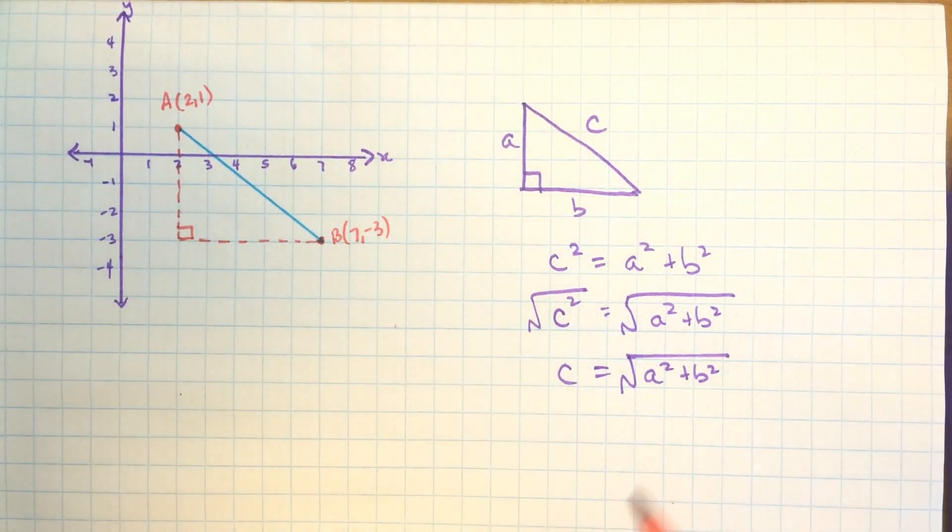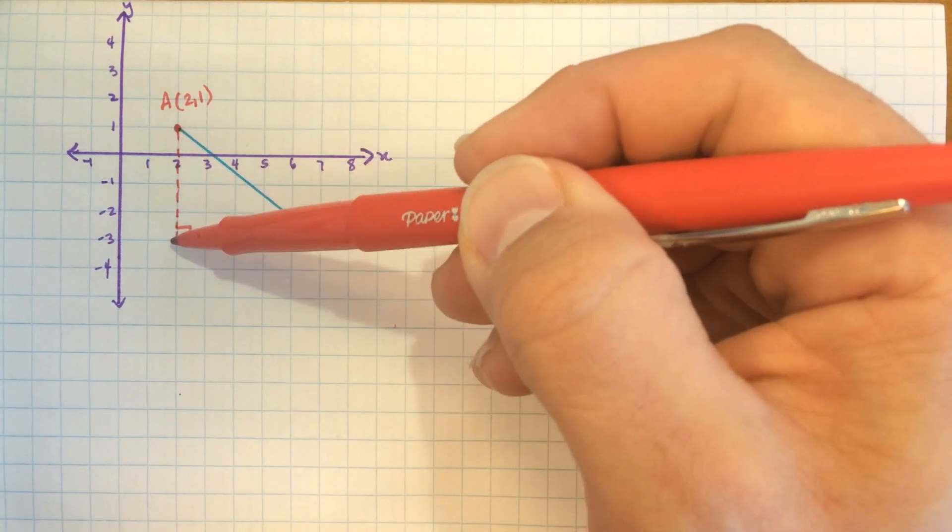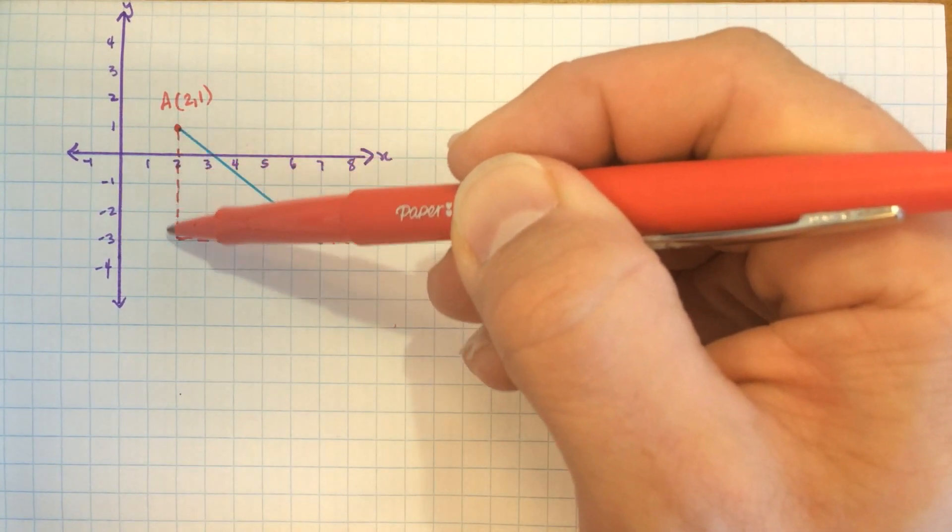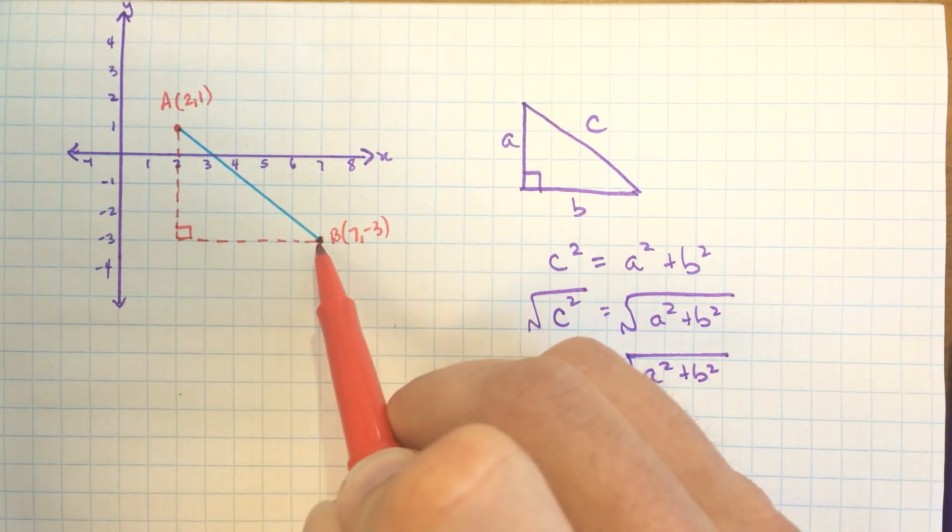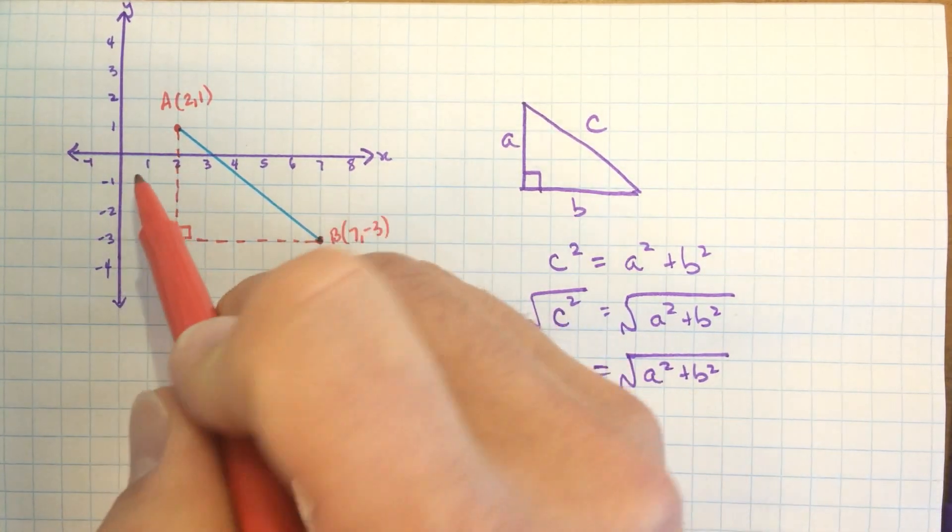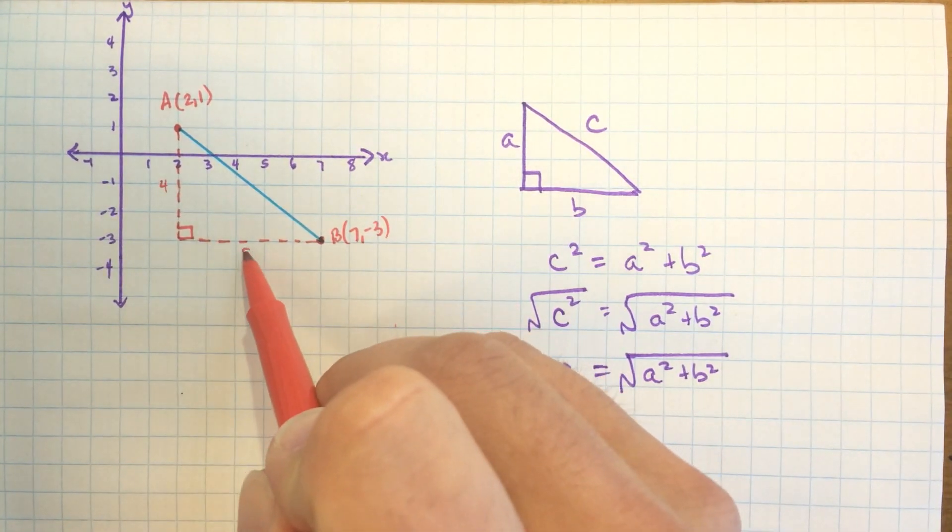And that is a right angle. And so I do know the length of this side. This side is of length four. One, two, three, four. And this one is of length five. One, two, three, four, five. And so this side is length four. And this side is length five.